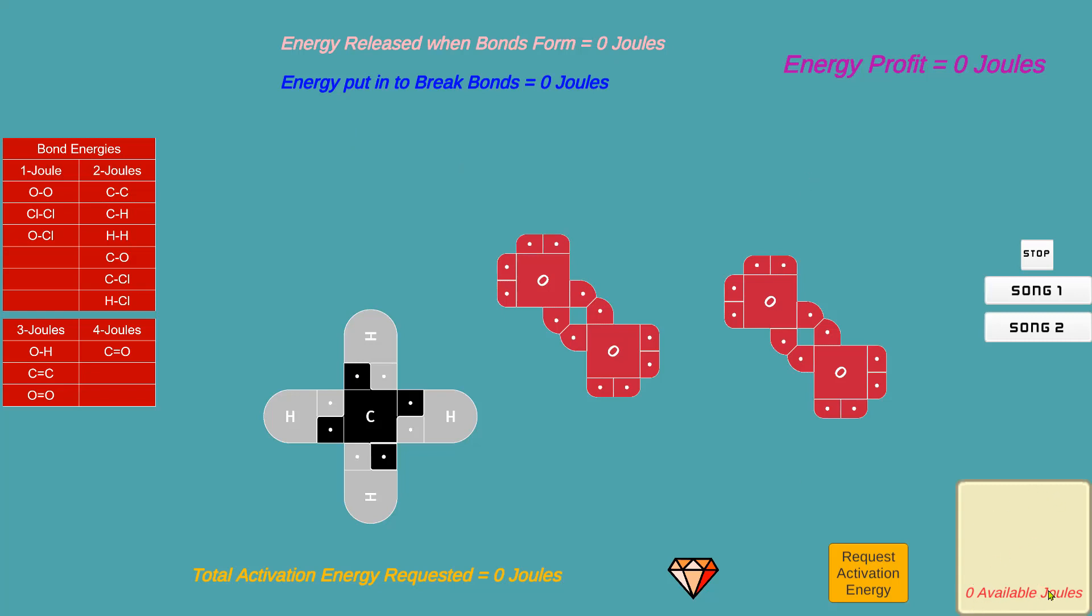Right now I have zero available jewels, so I will request them. I click it and I get a jewel. I click it, I get another jewel. This particular bond is a CH bond. Over here on the left, you can see a CH bond requires two jewels to break, so I have enough to break the bond. I broke the bond.